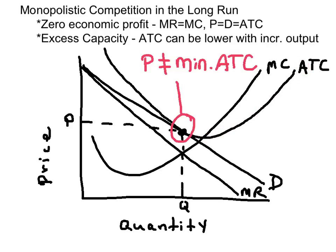Please take note that this price and output combo is not productively efficient, and that's because the price is not equal to the minimum ATC, a condition known as excess capacity. Excess capacity means that this firm can get even lower average total costs by increasing its output, but it does not have the incentive to do so.